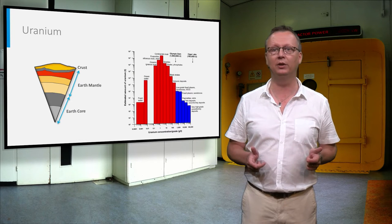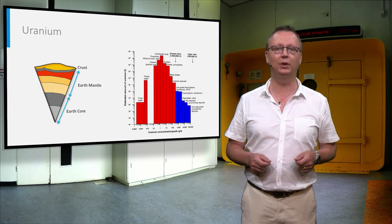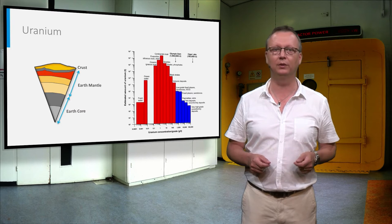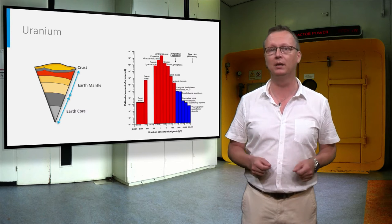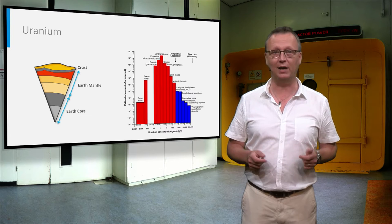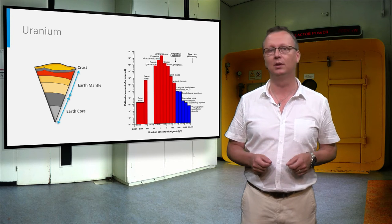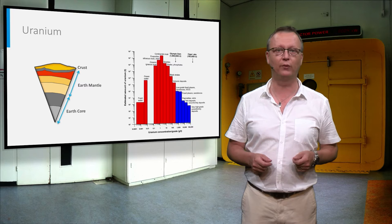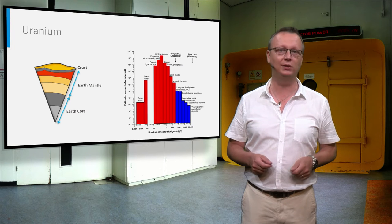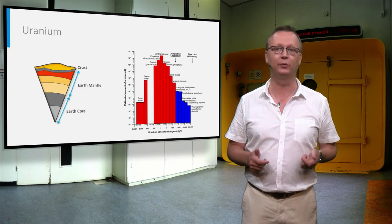Uranium is a rare element in the Earth. It is concentrated in the continental crust of the Earth at an average concentration of about one part per million, which is 500 times higher than, for example, gold. This concentration is too low for mining, and only deposits in which the uranium is further concentrated are of interest.